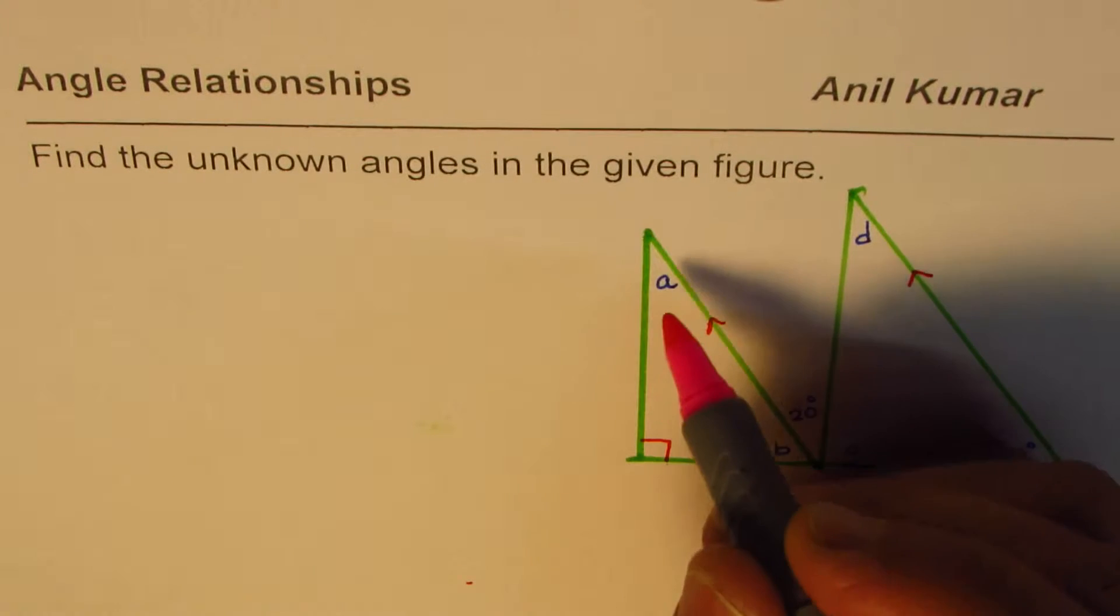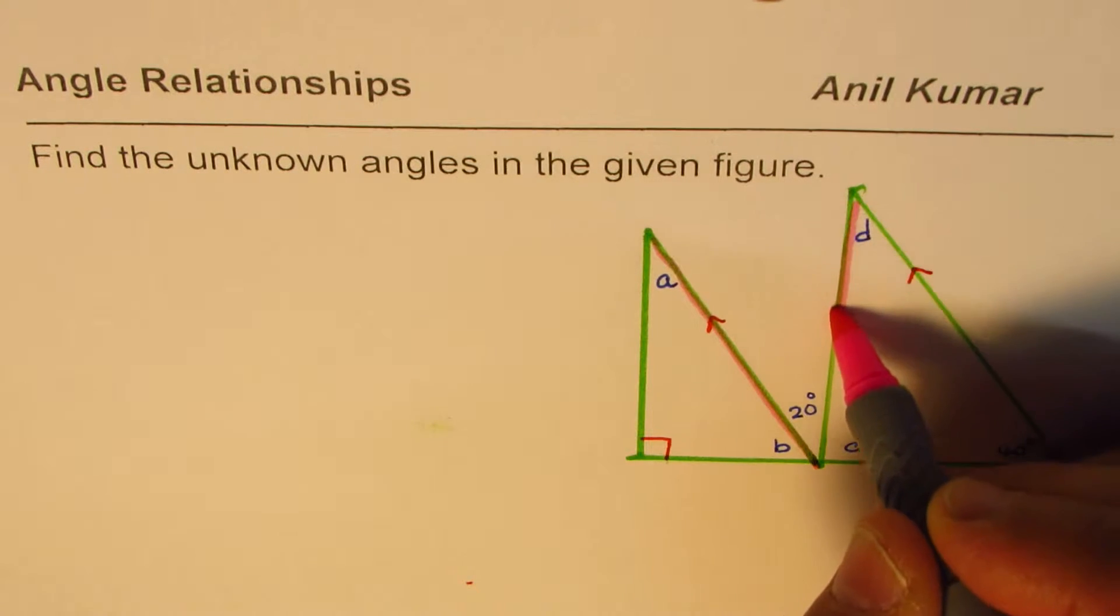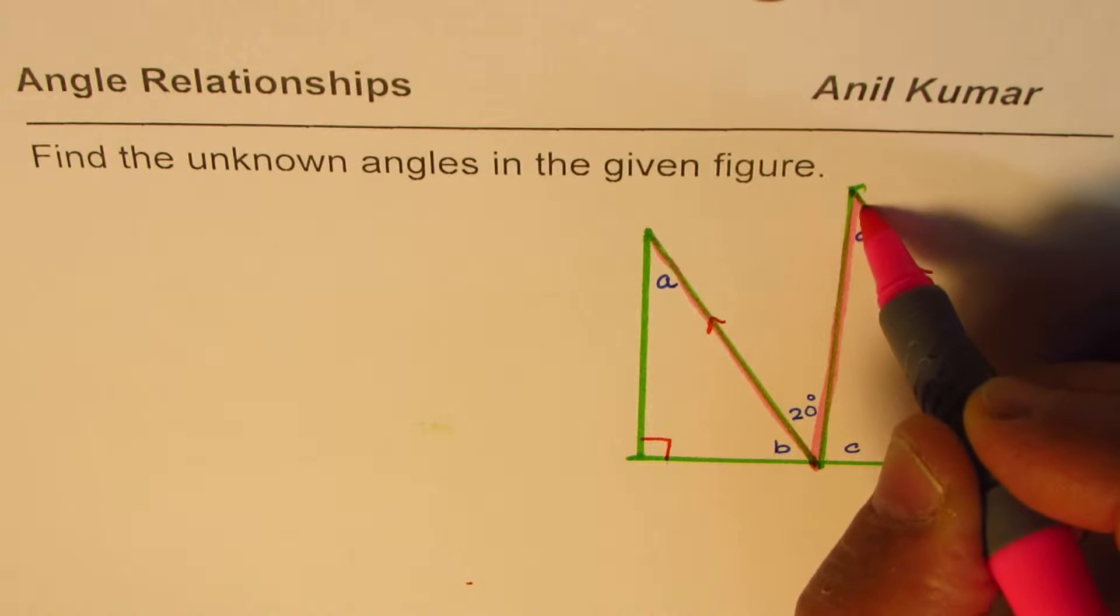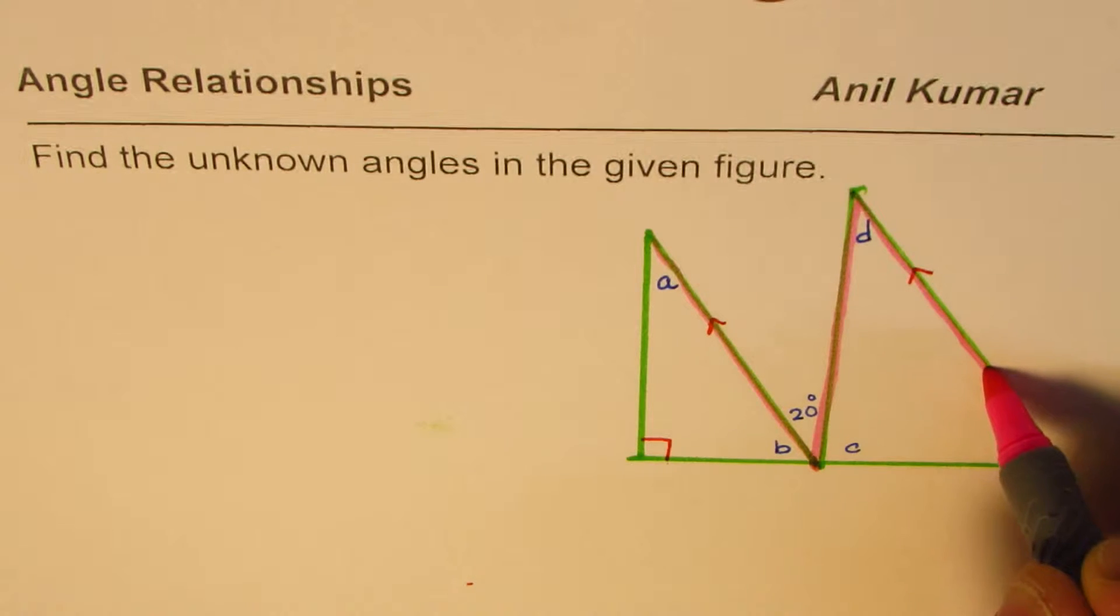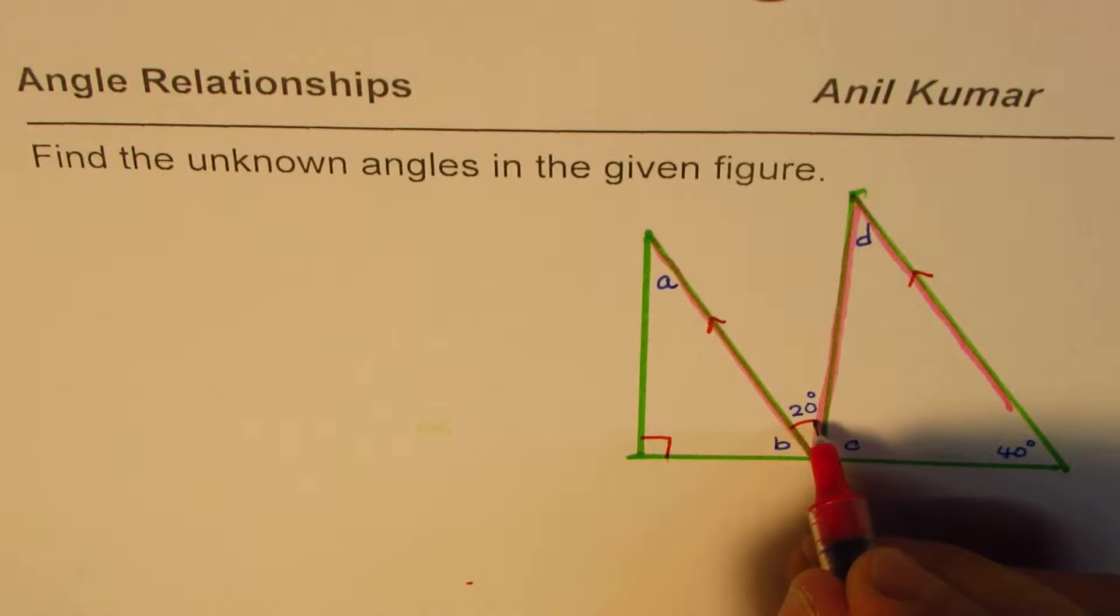As you can see, these parallel lines form a Z pattern. So this is the Z pattern. In this Z pattern, we have alternate angles which are equal.